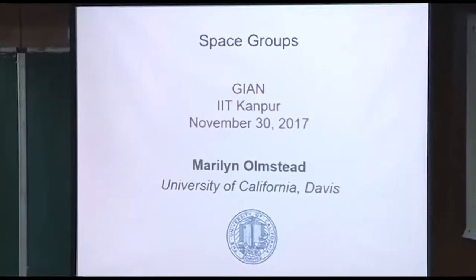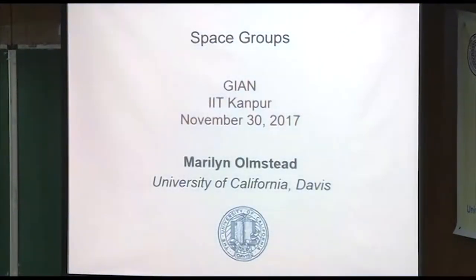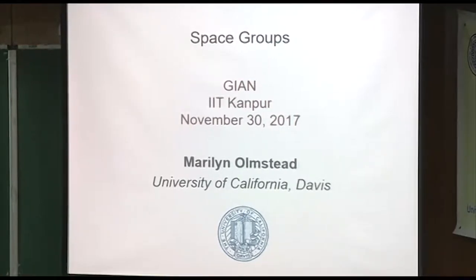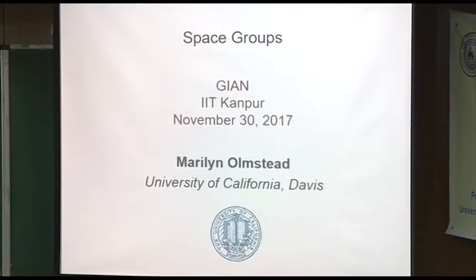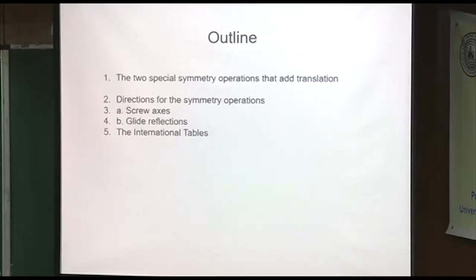Space groups — 230 of them. Do you all have access to the International Tables through your library or online? International Tables volume A has all the space groups. What we'll do today is talk about these two extra operations which actually lead to space groups — the screw axis and the glide reflections. I'll refer to the international tables frequently so that maybe you'll be inspired to do the same for yourself.